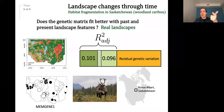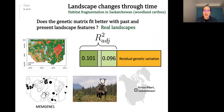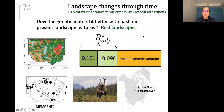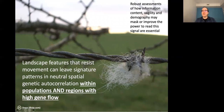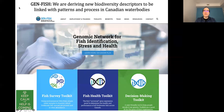We can use those predicted values from these models on maps to understand how the genetic structure changed — which is an interesting way to actually generate ways to think about conservation management and generate policy for future changes in the landscape. Landscape features that resist movement can leave signatures in spatial patterns and neutral spatial genetic variation related to genetic autocorrelation within populations and gene flow. This has been a really important set of tools that we have developed.